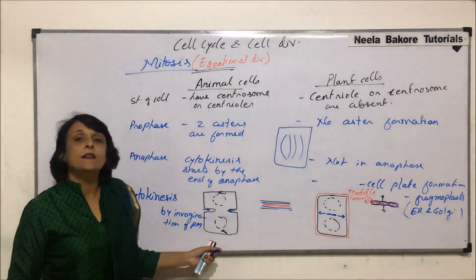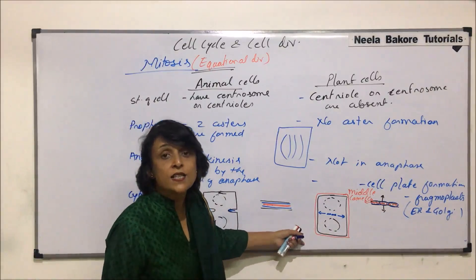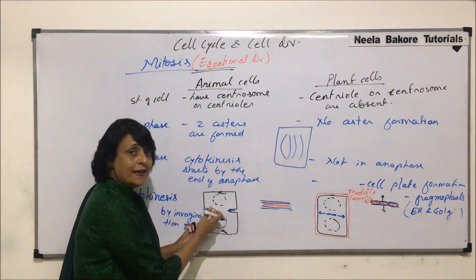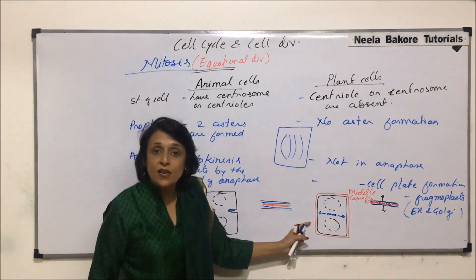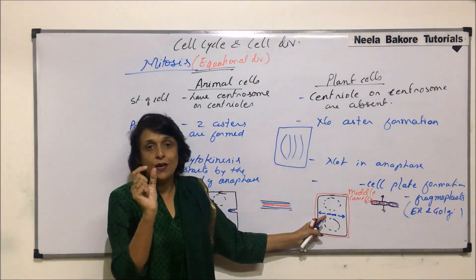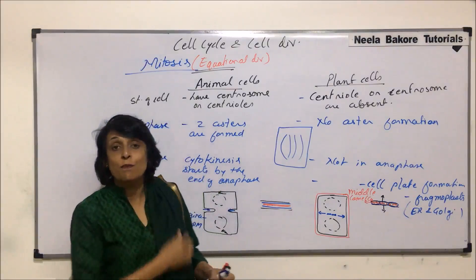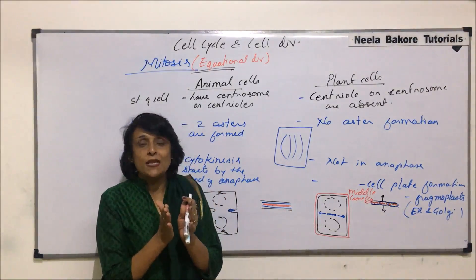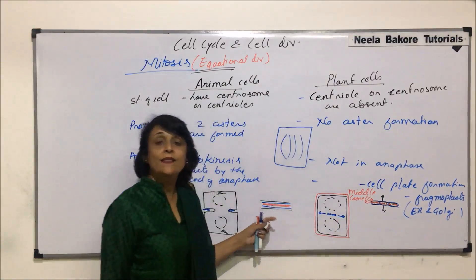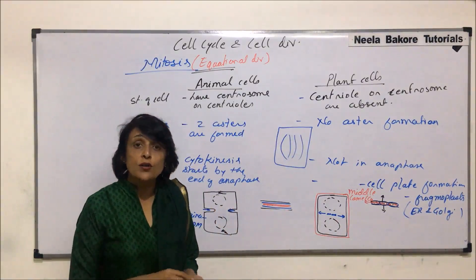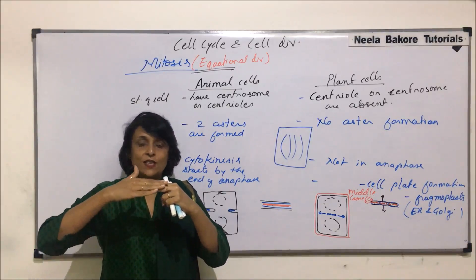In animal cells, cytokinesis occurs in a centripetal manner — from outside in — whereas in plant cells it occurs in a centrifugal manner — from inside out. In plant cells, since invagination cannot occur, pieces of Golgi and ER come to the middle and are called phragmoplasts. These form the cell plate, which secretes the middle lamella made of calcium pectate, around which the cytoplasm secretes the primary cell wall, forming the complete membrane between the two daughter cells.